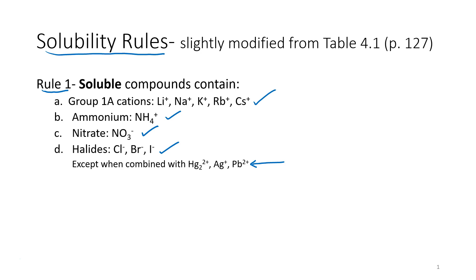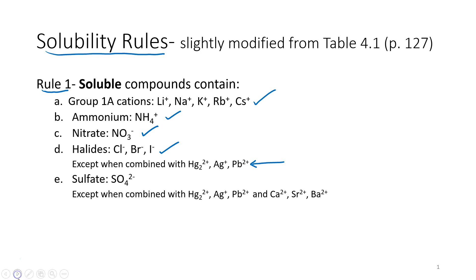And finally, all sulfates are soluble except when combined with mercury 1, silver, lead 2, plus calcium, strontium, and barium.